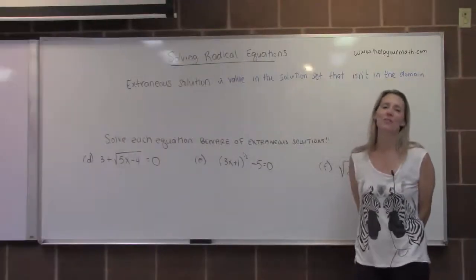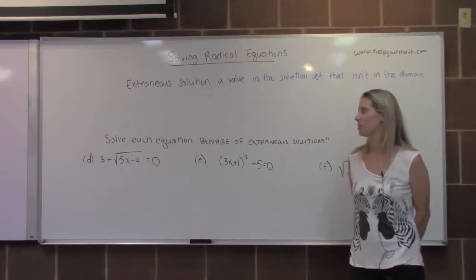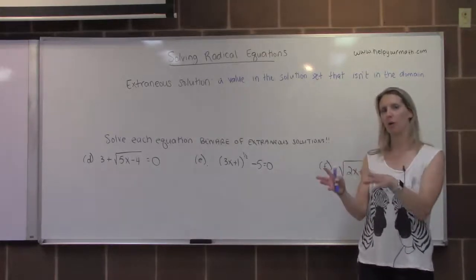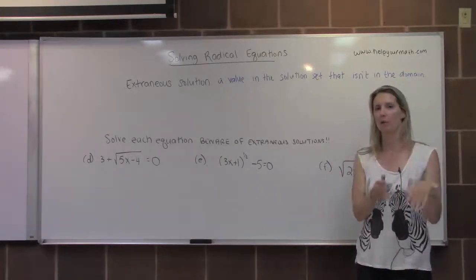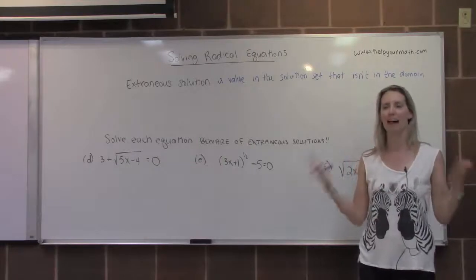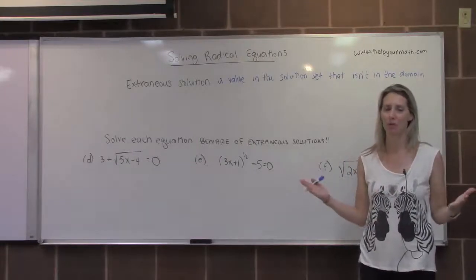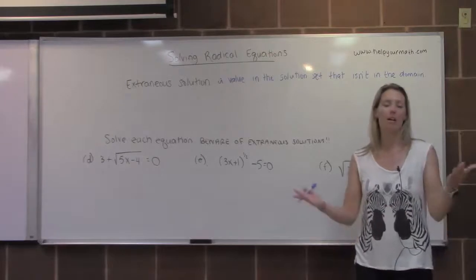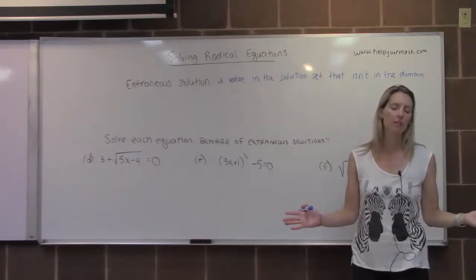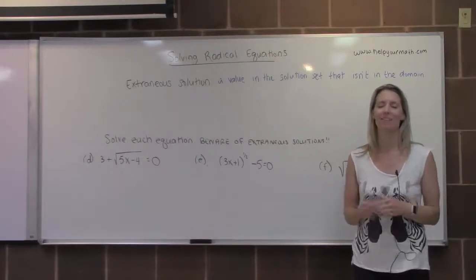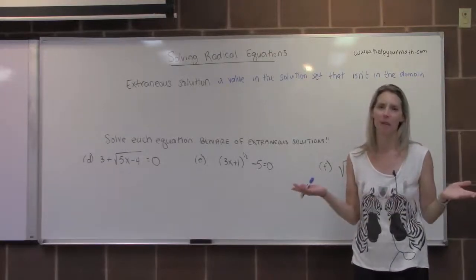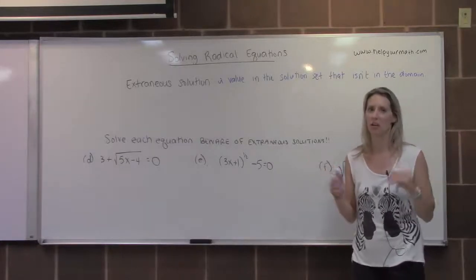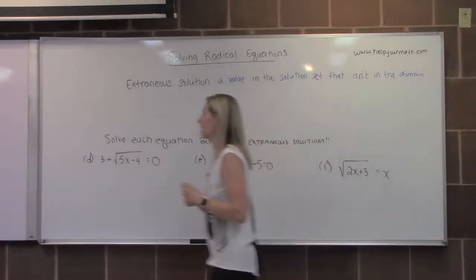One thing to note: if you have a square root equal to something negative, you know it must have no solution. If you recognize that right away, you don't have to go through all the work. If you don't recognize it right away, that's okay — go through the work, check it, and you'll find it doesn't work. No solution.